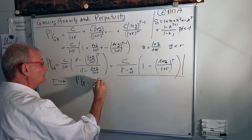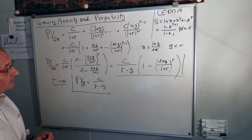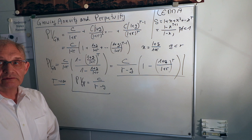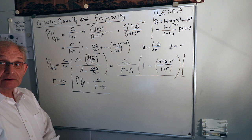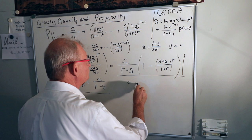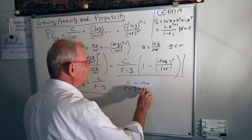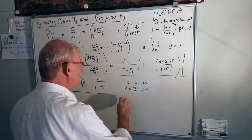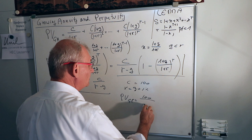This is the formula we have seen before, which is very useful in valuing firms such as Facebook. We understand intuitively that when r is close to g, we are dividing a number by something very small, so the resulting value is very large. For example, suppose c is 100 million — that's a lot.